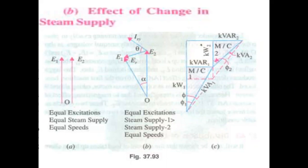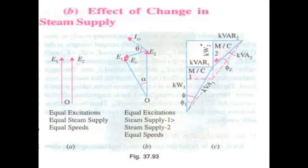For the effect of change in excitation, we increased the excitation of one machine. Now coming to the effect of change in steam supply — suppose the excitations are kept the same for both alternators, but the steam supply to alternator one is being increased. If you increase the power input to the prime mover, then the steam supply will be increased.